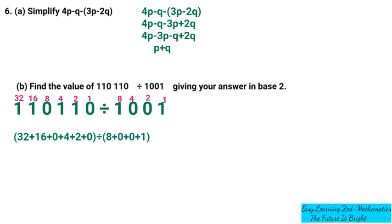Adding the products for the dividend: 32 plus 16 gives 48, plus 4 gives 52, plus 2 gives 54, plus 0 gives 54. So the dividend in base 10 is 54. For the divisor: 8 plus 0 plus 0 plus 1 gives 9. So the divisor in base 10 is 9.